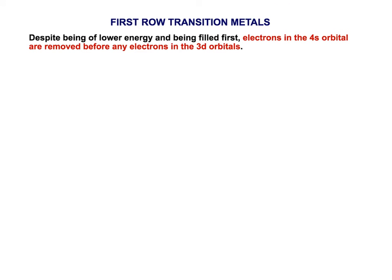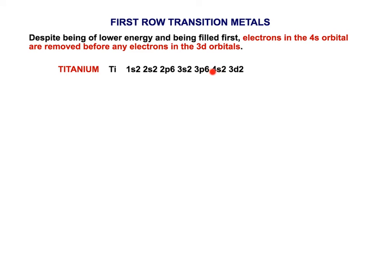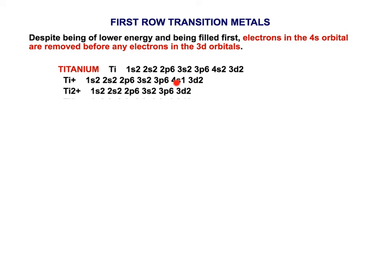When transition metals form ions, there's a key difference: despite the 4S orbital being filled first, electrons in the 4S are removed before any electrons in the 3D orbital. For titanium, the full configuration ends in 4S² 3D². Forming Ti⁺ removes one electron from 4S; Ti²⁺ has lost both 4S electrons and no longer has a 4S subshell. A third or fourth electron removed then comes from the 3D as expected.